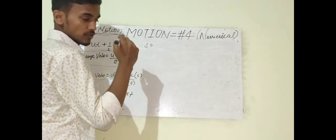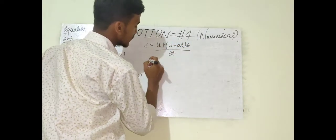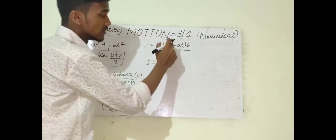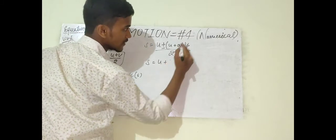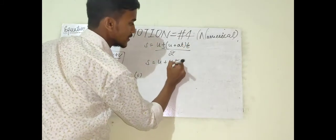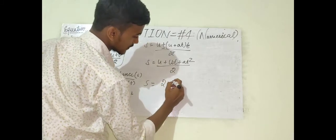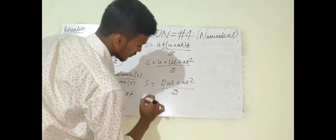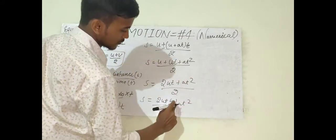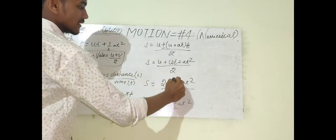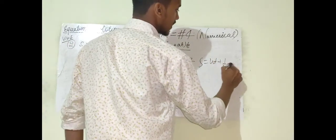Expanding: S = (2U + AT) / 2 × T = (2UT + AT²) / 2. Separating the terms: S = 2UT/2 + AT²/2. The 2s cancel, giving the final result: S = UT + ½AT². Where S is distance traveled, U is initial velocity, T is time, and A is acceleration.